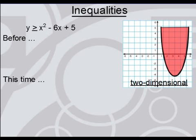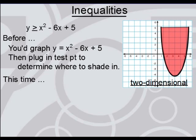Here we're going to look at inequalities, and first of all I want to refer to this inequality here: y is greater than or equal to x² - 6x + 5. Before in the past, what you would do is you would just simply graph this parabola, and then after you'd graph the parabola solid because of the fact that it's equals, you'd then plug in a test point to determine which way to shade in, a test point to see if you would shade inside or outside the parabola.